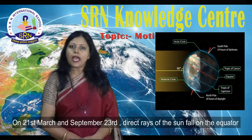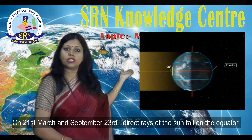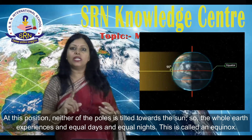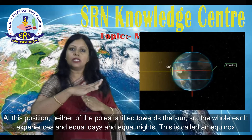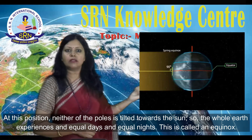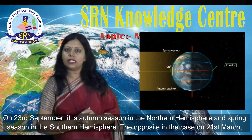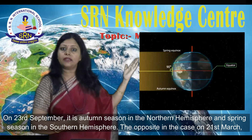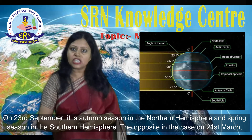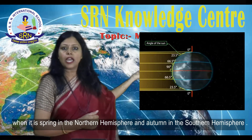On 21st March and 23rd September, direct rays of the Sun fall on the equator. At this position, neither of the poles is tilted towards the Sun, so the whole Earth experiences equal days and equal nights. This is called an equinox. On 23rd September, it is autumn season in the northern hemisphere and spring season in the southern hemisphere. The opposite is the case on 21st March, when it is spring in the northern hemisphere and autumn in the southern hemisphere.